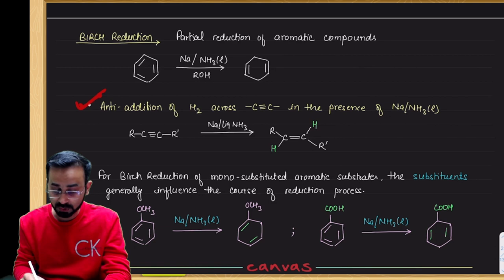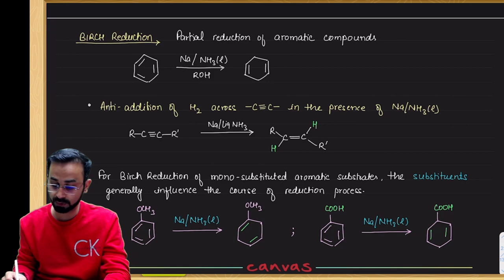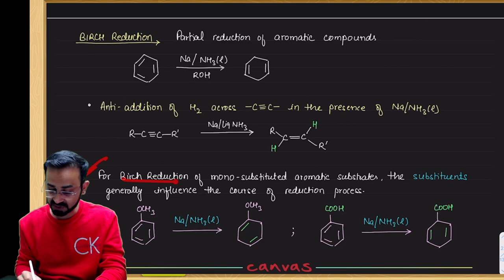And the second task: anti-addition of H2 across the triple bond. Look, this is alkyne. Alkyne with sodium in the presence of liquid ammonia gives both hydrogens on the opposite side. So there is anti-addition here.